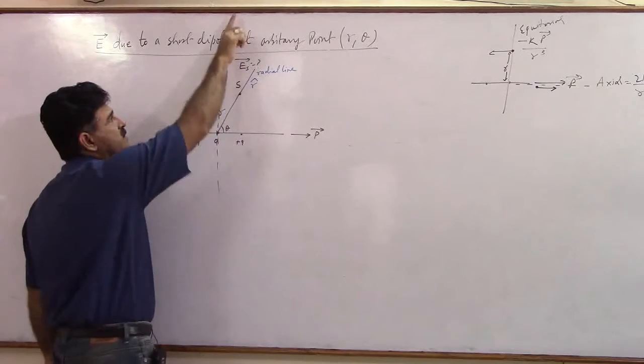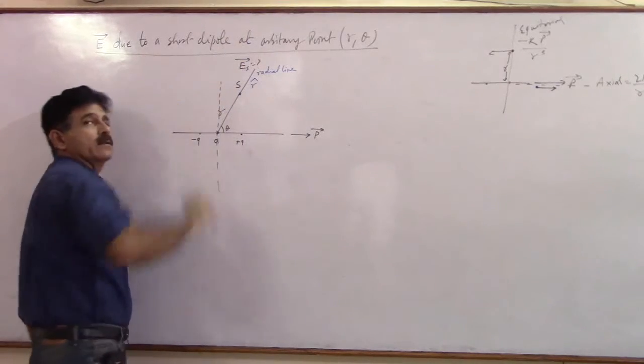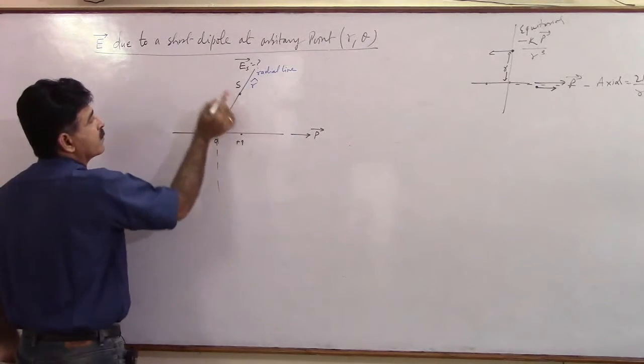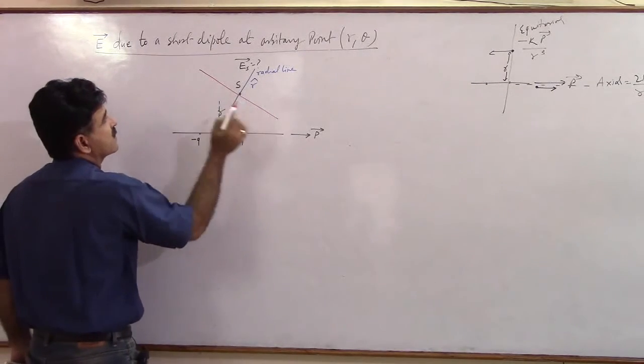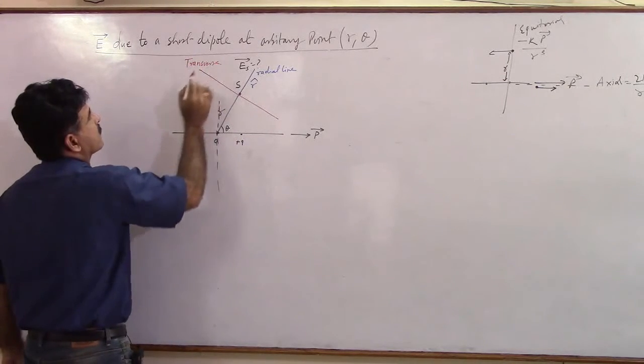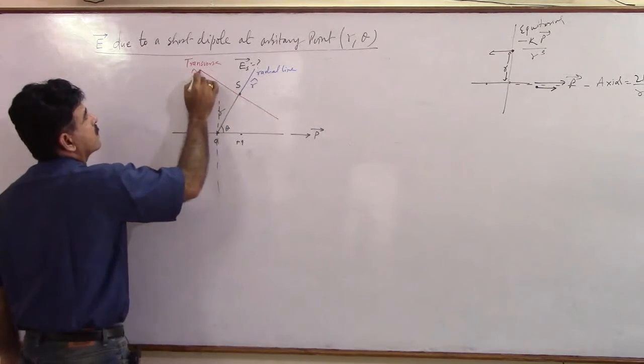If the point was here, this is the radial. If the point was here, this is the radial. Now perpendicular to this, I want you to identify one more line. Let us call this line as transverse line. Let us denote a vector T cap here.